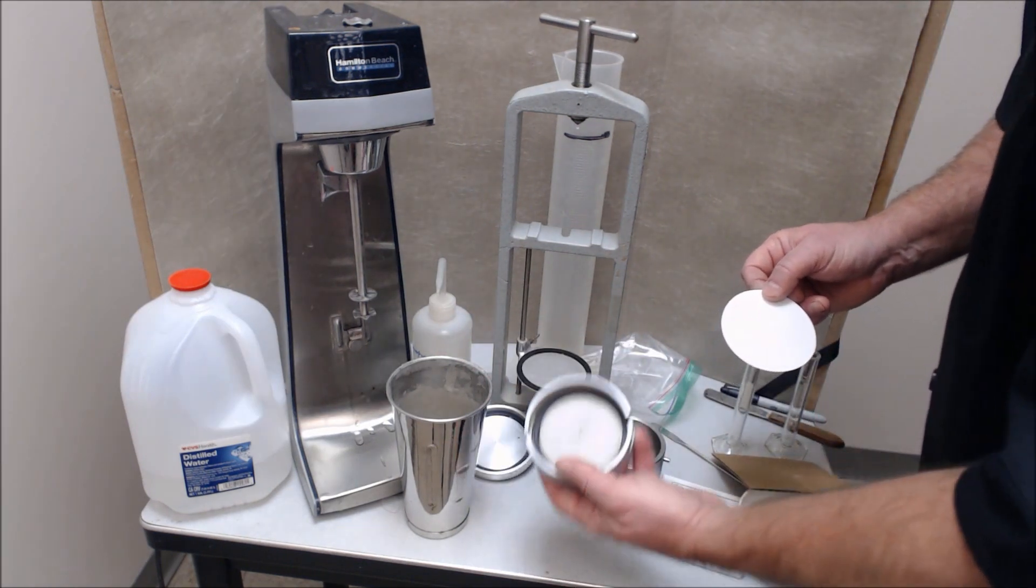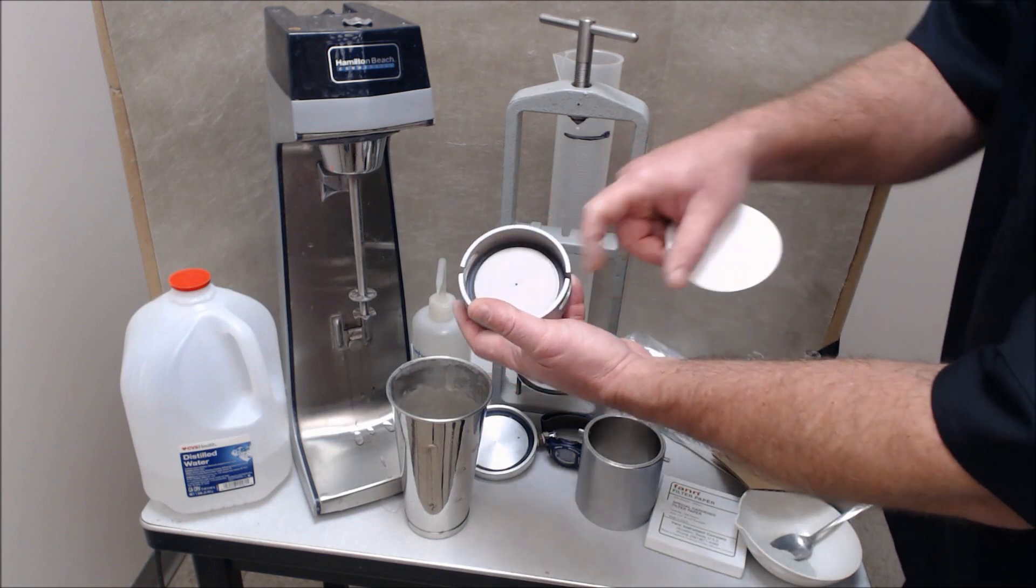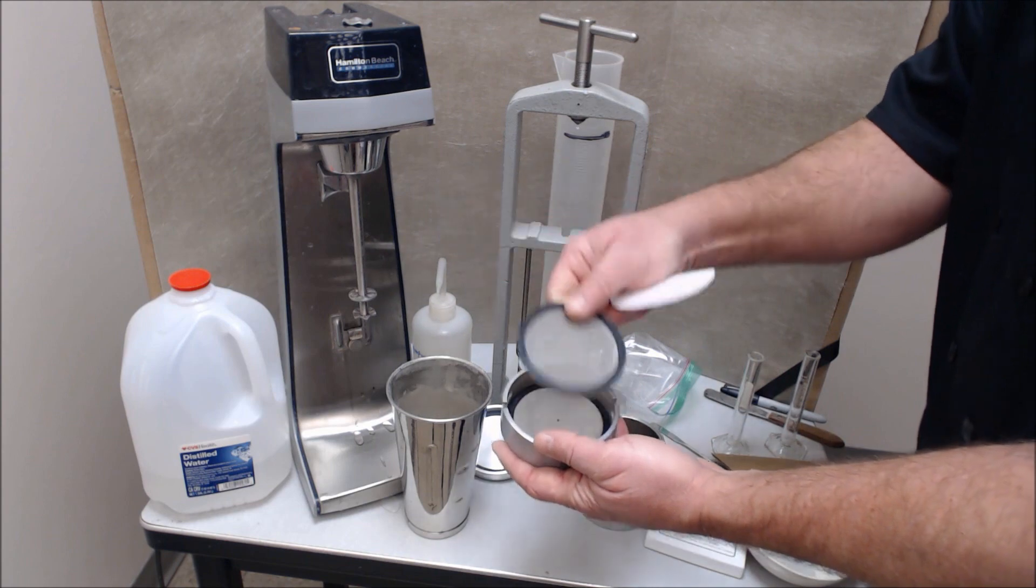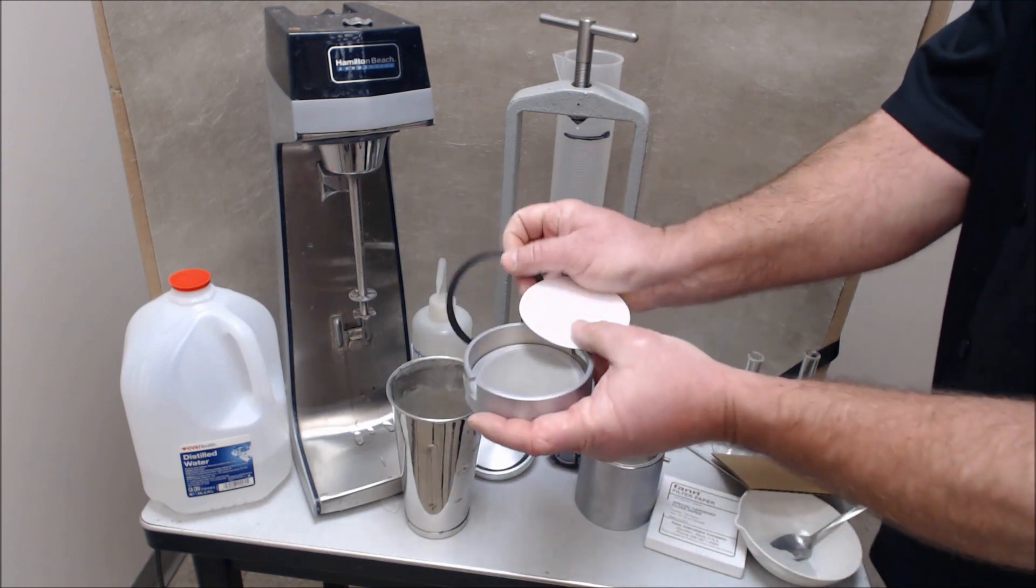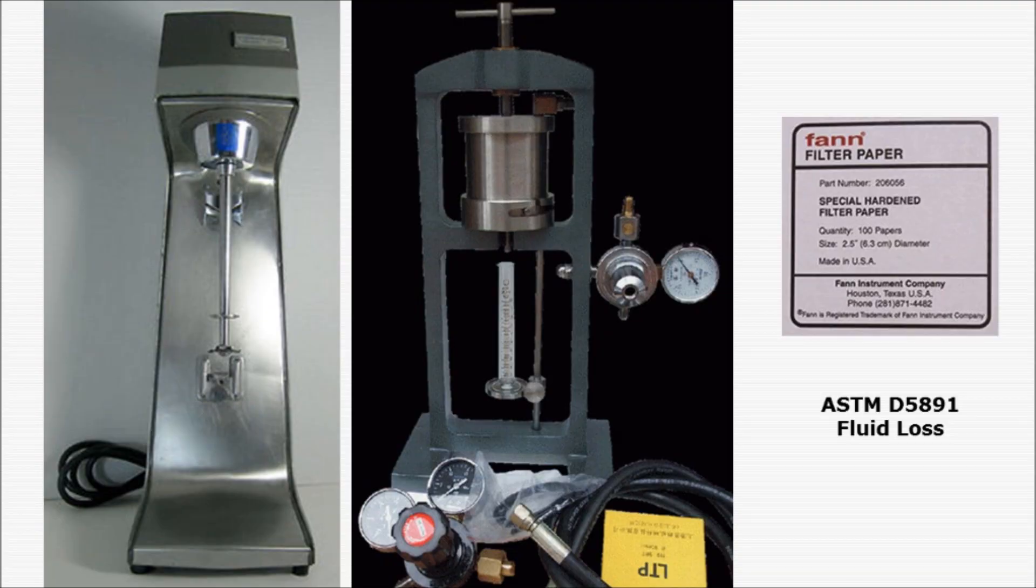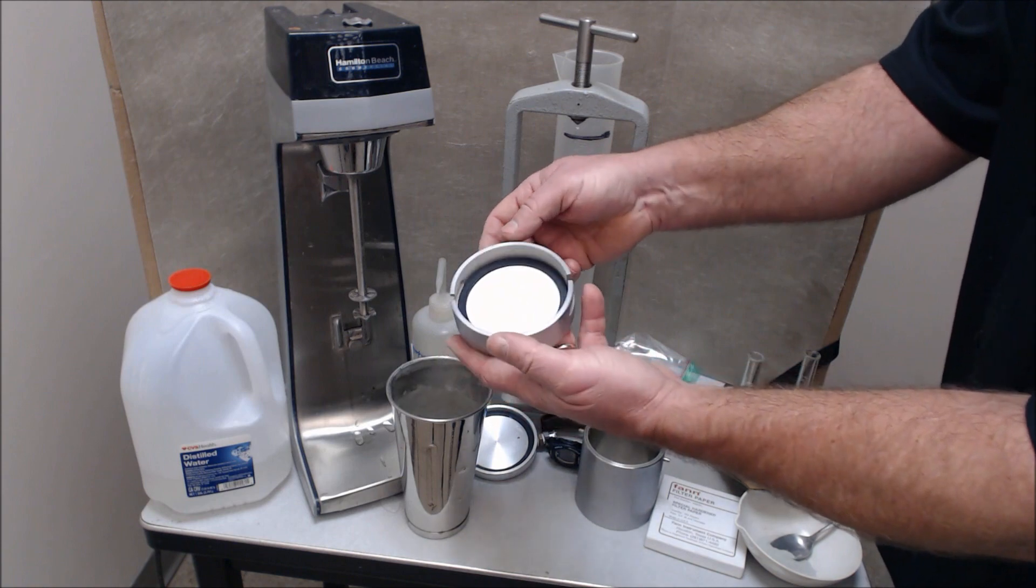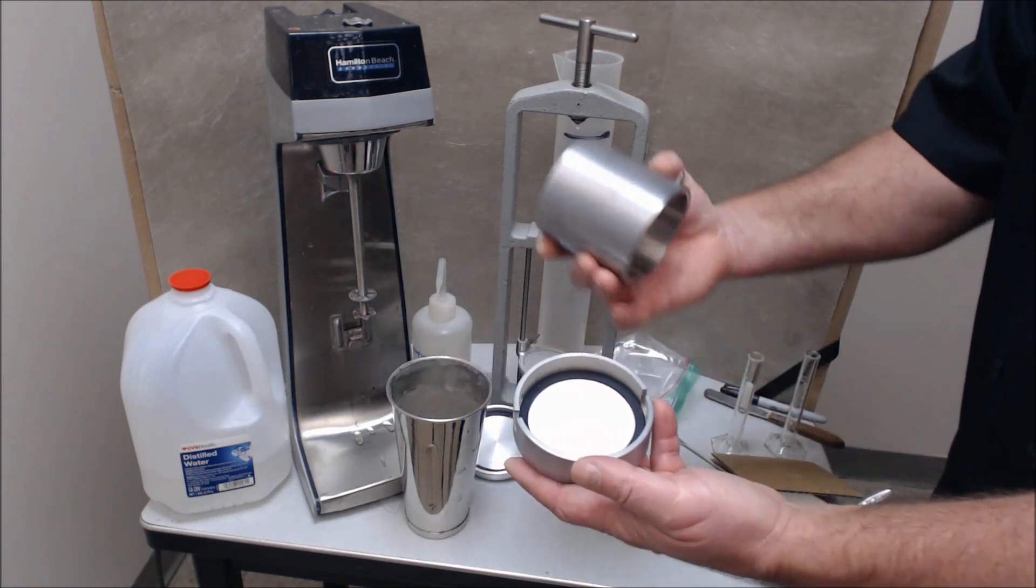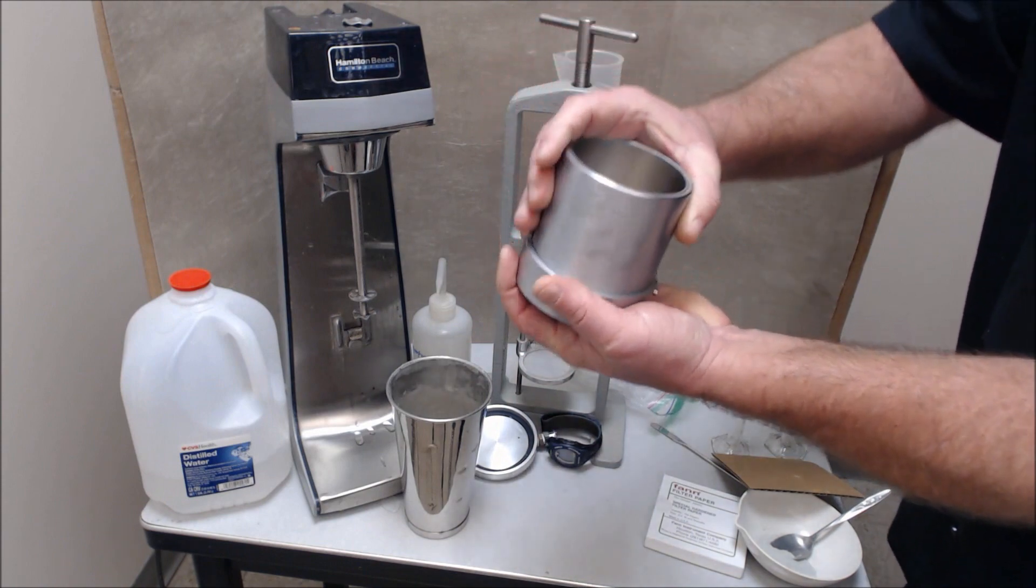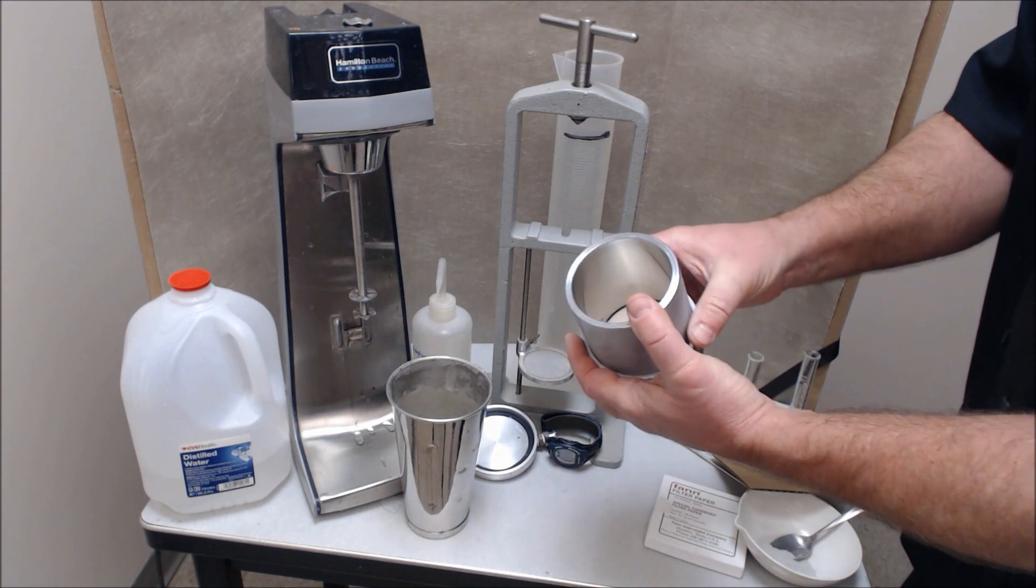Now we're loading the filter press. This is the base of the fan filter press. It has a gasket in the base of it. You need to place the screen over top of that, then the filter paper. This filter paper is prescribed within the standard. Then another gasket. This is the housing for the fan filter press and you turn it. Now you're prepared to introduce the gel.